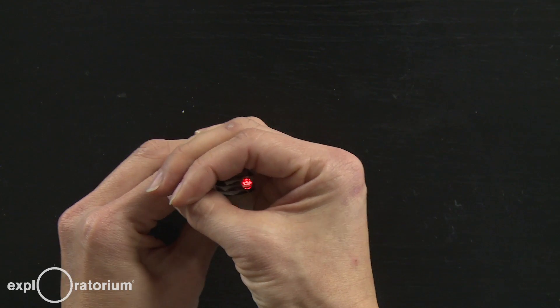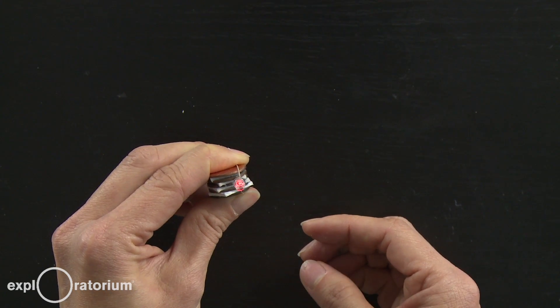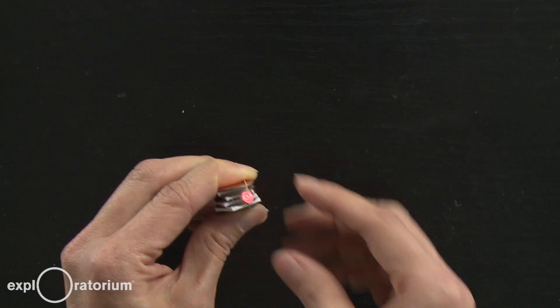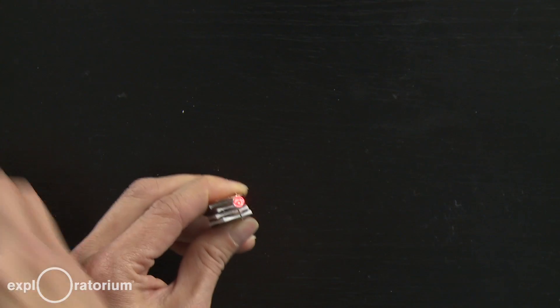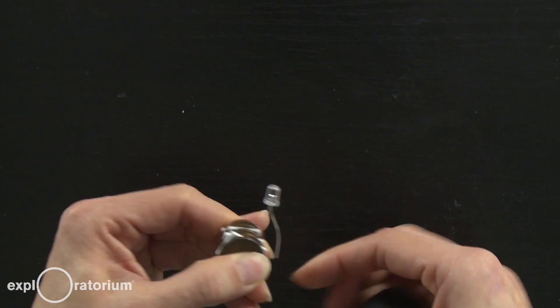And you can see that the red LED starts to light. So this five penny battery is enough to power a red LED. At this point, to make it easier, you can take a small piece of electrical tape and wrap the whole battery together.